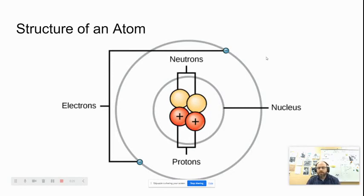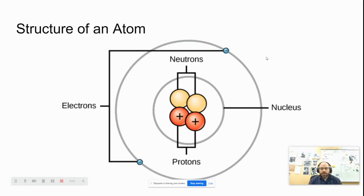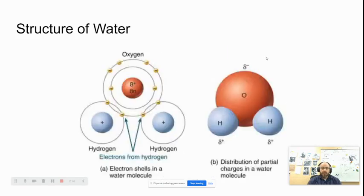Just to review the structure of an atom: an atom is composed of protons, neutrons, and electrons. The protons are positively charged, and the neutrons have no charge — this represents the nucleus of the atom. The electrons are negatively charged and can be found around the nucleus. Electrons are primarily what's going to be involved in chemical bonding and what causes an atom or molecule to behave in a certain way.